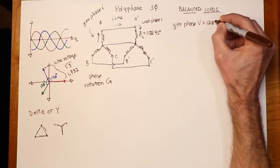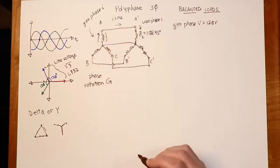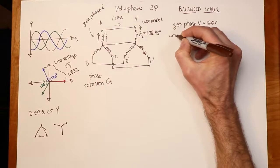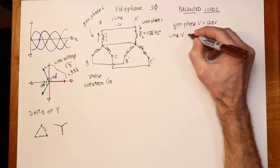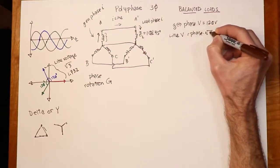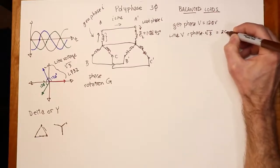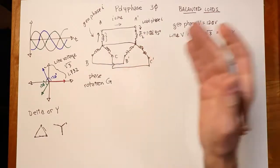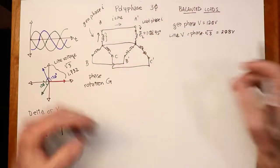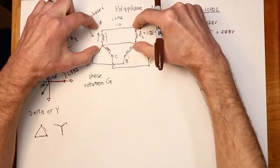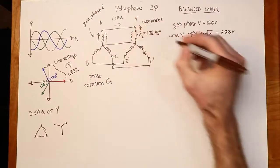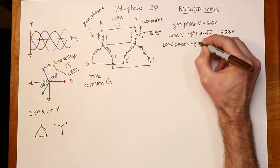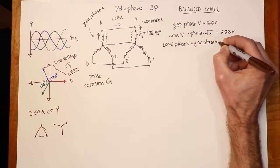If we start with a standard 120-volt North American system, the generator phase voltage is 120 volts out at each terminal. Then the line voltage from terminal to terminal would be the phase voltage times the square root of three. Multiplying: 120 times √3 equals 208 volts — a very common three-phase line voltage. In Y-Y configuration the load phase voltage equals the generator phase voltage, which is 120 volts, because the neutral connection forces them to be equal.